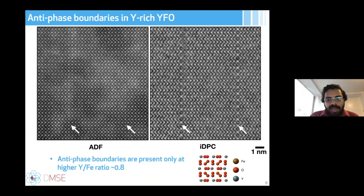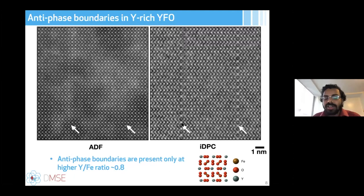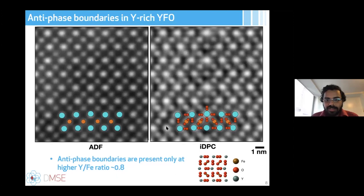We also found antiphase boundaries in yttrium-rich samples, which don't directly cause breaking of inversion symmetry — different yttrium-rich samples without antiphase boundaries still show ferroelectricity, and antiphase boundaries only appear at very high yttrium-to-iron ratios. However, they are important for conductivity measurements. Notably, IDPC images show better contrast of antiphase boundaries than ADF images, making IDPC an extremely useful tool for understanding defects in thin films.